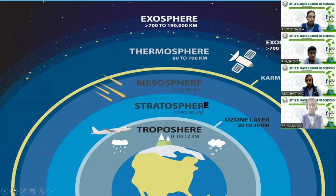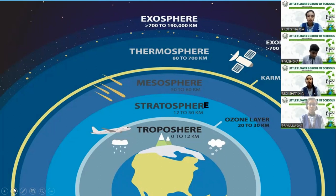The third layer is the mesosphere, which lies above the stratosphere and is the coldest layer of the earth's atmosphere. This is the place where most meteors burn up before crashing. The fourth layer is the thermosphere, the hottest layer of our earth's atmosphere, as it absorbs most of the sun's radiation, and it also works as an orbit for many satellites. The last and outermost layer is the exosphere, which holds most of the sun's light gases like helium, hydrogen, oxygen, and carbon dioxide.